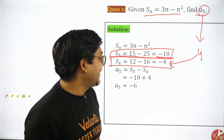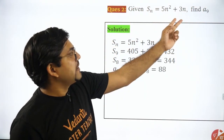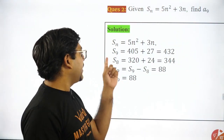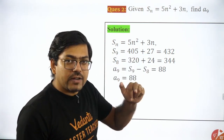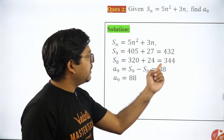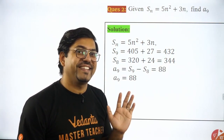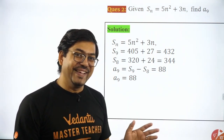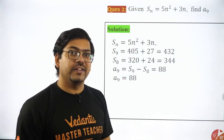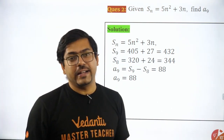Got it? I know you got it. Let me show you one more example. If S_N is given and you have to find A9, then find S9 and S8 — that's one lesser — and just subtract them: S9 minus S8. You get A9 = 88. Super simple, super easy. You don't have to do all that complicated work.